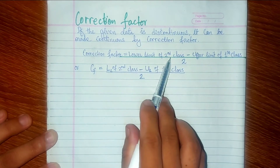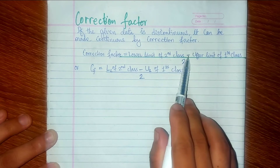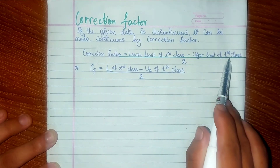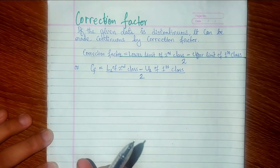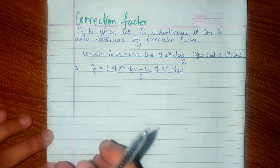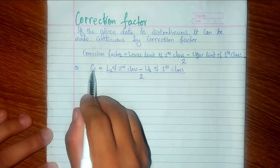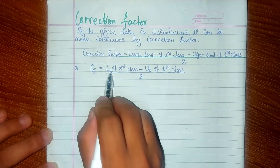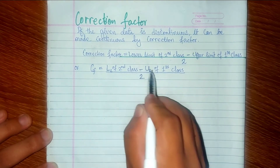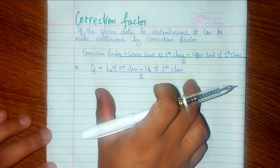The formula for correction factor is: CF equals lower limit of the second class interval minus upper limit of the first class interval, divided by two. Using this factor, we can convert discontinuous data into continuous data.